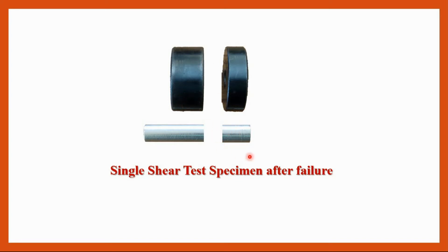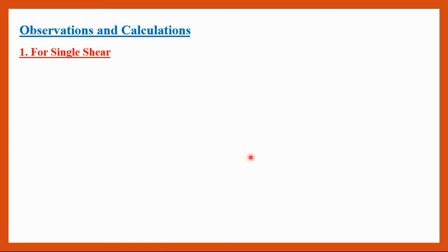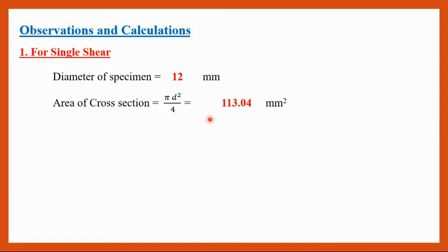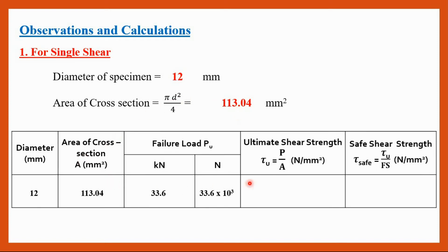The specimen after failure will look like this. For the single shear observations and calculations: we measure the diameter of the specimen by vernier caliper and I got it as 12 mm. The area of the cross section is given by pi d squared by 4, and I got it as 113.04 mm square. From the UTM, the maximum load at failure was 33.6 kilo Newton, which in Newton is 33.6 into 10 raised to 3 Newton.